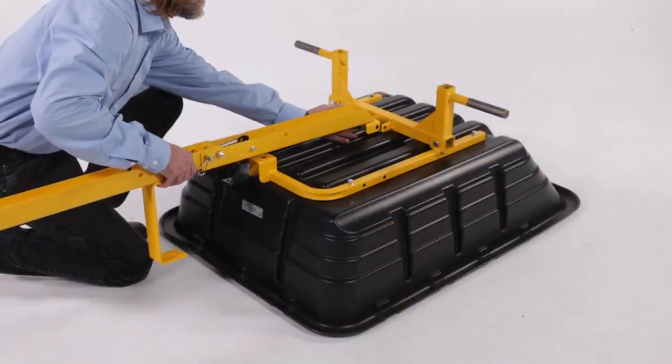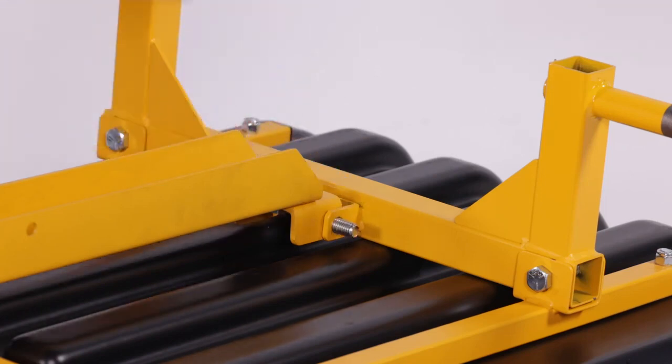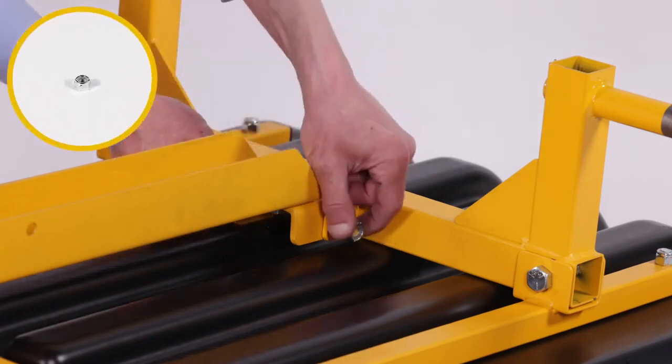Then align the tongue assembly, and secure it with a 1/2 inch by 3 1/4 inch hex bolt, Part S, and a 1/2 inch Nylok hex nut, Part K.